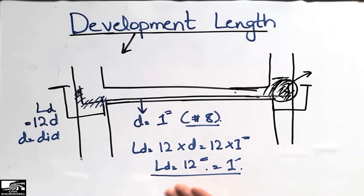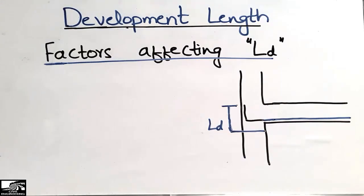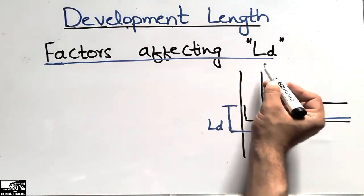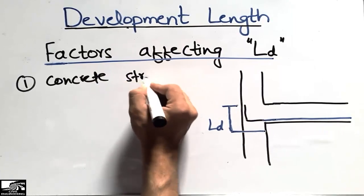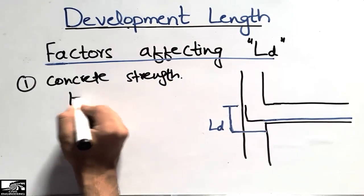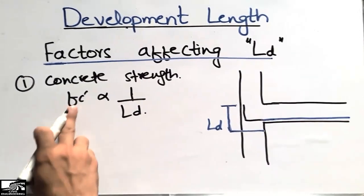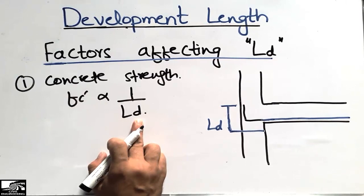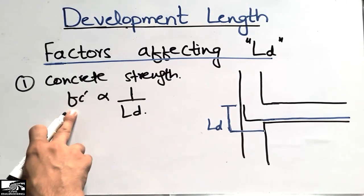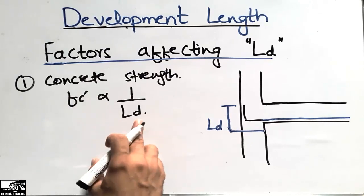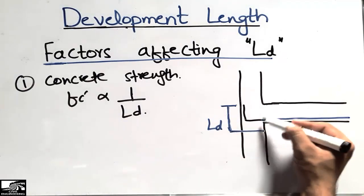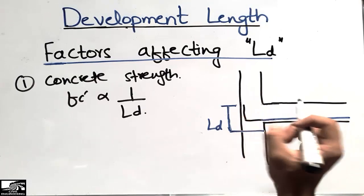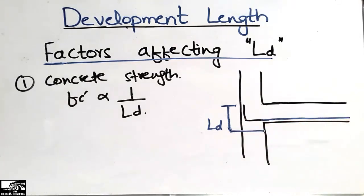This is the usual practice on site, but it depends on some factors. The first factor affecting development length is concrete strength. Concrete strength has an inverse relation with development length — if high-strength concrete is used, we require less development length. If low-strength concrete is used, we require more development length, because higher concrete strength improves the bond in the beam-column region.